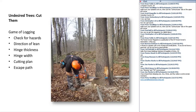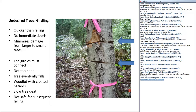With any luck, you'll have a logger that'll do the work for you. The other option is to girdle these trees. I'm not a very big fan of girdling, but it does have some positive attributes. It's quicker than felling the trees — you can girdle the tree and kill it within just a few seconds with a chainsaw, an axe, or chemicals. Another advantage is there's no immediate debris to deal with. And perhaps the biggest advantage is that it minimizes damage from larger to smaller trees — if you have great big trees among smaller trees, those big crown trees are invariably going to do some damage when felled, so it may be more prudent to girdle them.